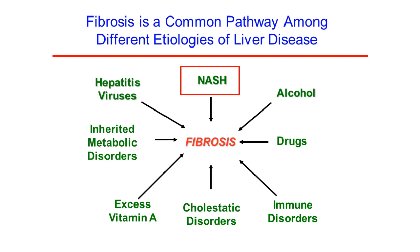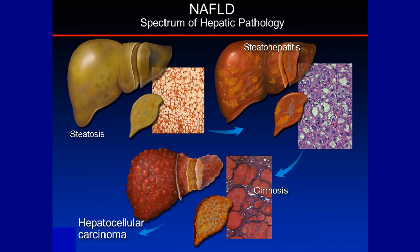NASH is really the biggest rising health threat, at least in the United States and Western Europe and around the world, associated with the widespread prevalence of obesity, type 2 diabetes, and hyperlipidemia. NASH is part of a spectrum collectively known as non-alcoholic fatty liver disease, which can include plain fat in the liver or progression to an inflammatory fibrotic condition known as steatohepatitis or NASH. NASH, over time, will in many cases progress to cirrhosis, and once cirrhosis develops, there is a heightened risk of hepatocellular carcinoma or primary liver cancer.